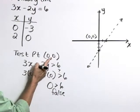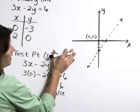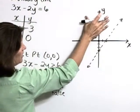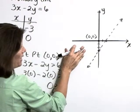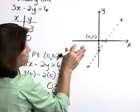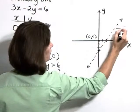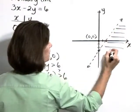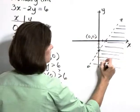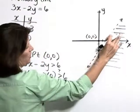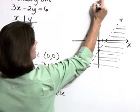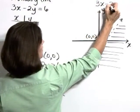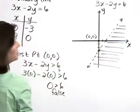Therefore, the point that is the origin does not satisfy our inequality, indicating that none of these points over here on this side of the boundary line satisfy that inequality. Therefore, the points on the other side do. So here we have a graph of our solution region to the inequality 3x minus 2y is greater than 6.